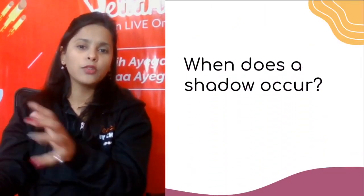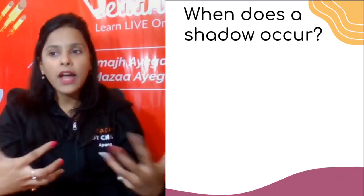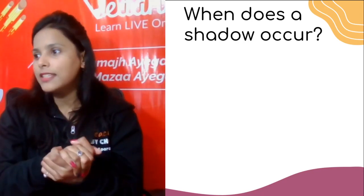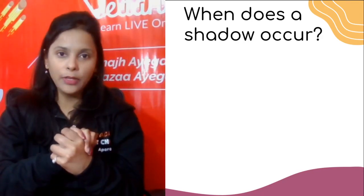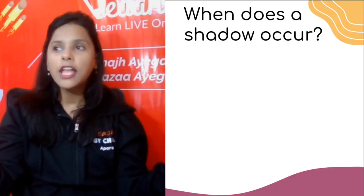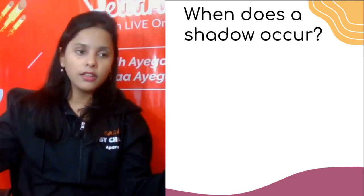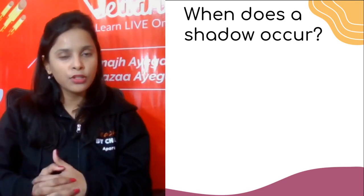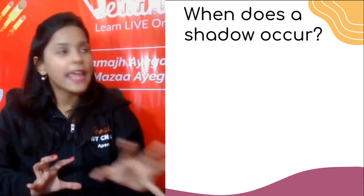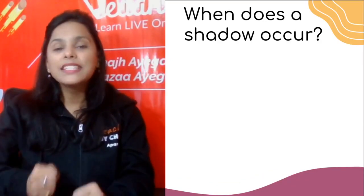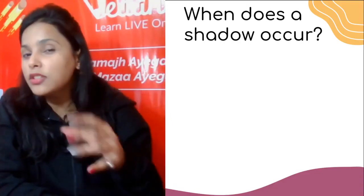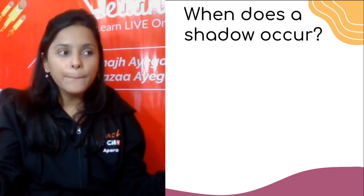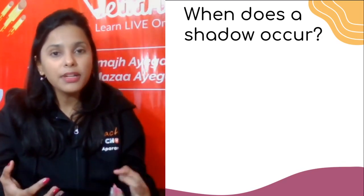So why is a shadow black? First of all, we have to understand how shadows work. What happens is, let's take an example. If I just close the doors and do not allow even a single ray of light entering into that room, and I switch off every other artificial light also — will you be able to see anything in the room? No. Because there is absence of light. If there is absence of light, how can you see anything?